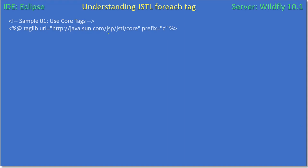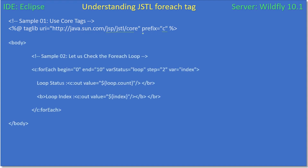As already mentioned in other videos, here we are referring to the JSP JSTL code with the prefix C. You can see how we are using the forEach loop here. This is the for loop: for int index equal to 0, index less than or equal to 10, index equal to index plus 2 - that means the index will increment in steps of 2.